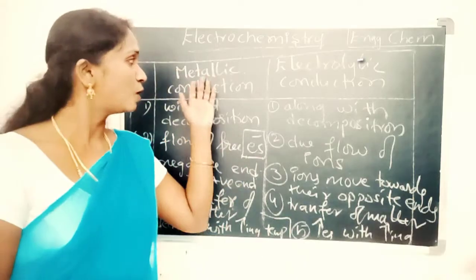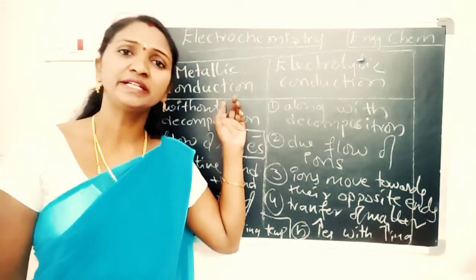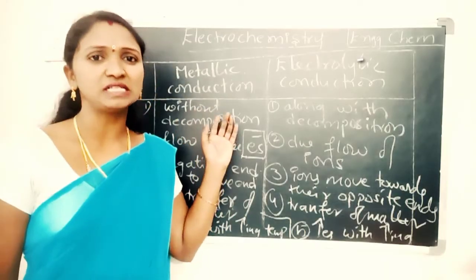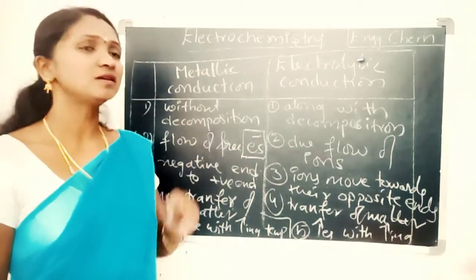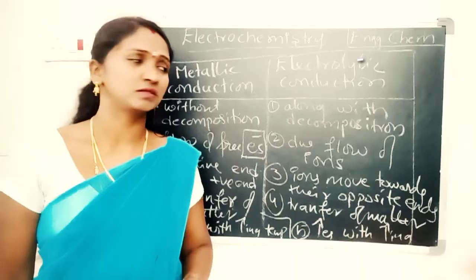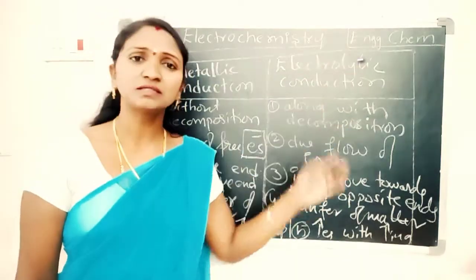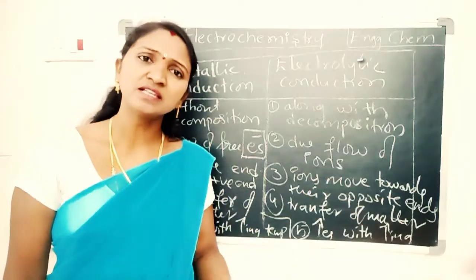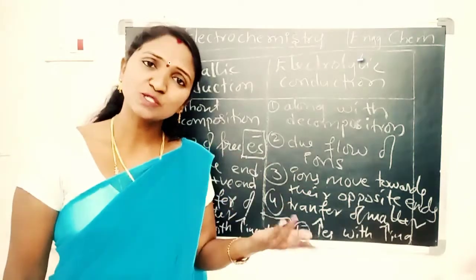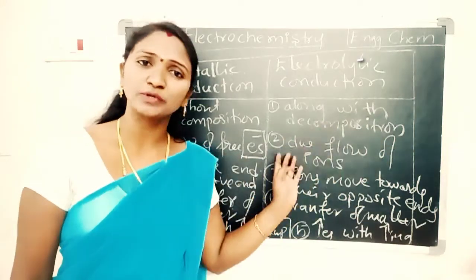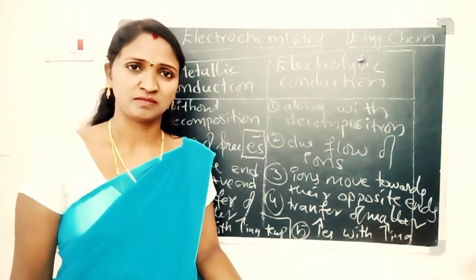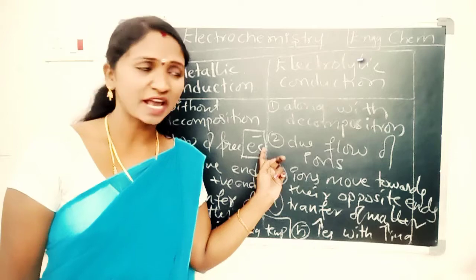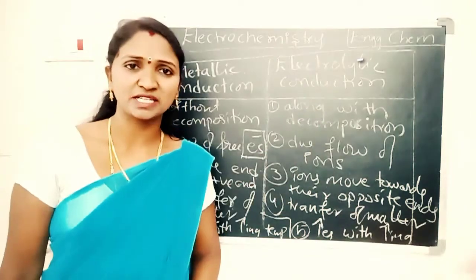Examples of metallic conductors include all metals such as copper, aluminium, and iron, as well as graphite. Examples of electrolytic conductors include acidic solutions like HCl and H2SO4, and basic solutions like sodium hydroxide and potassium hydroxide. These are the key differences between metallic conduction and electrolytic conduction.